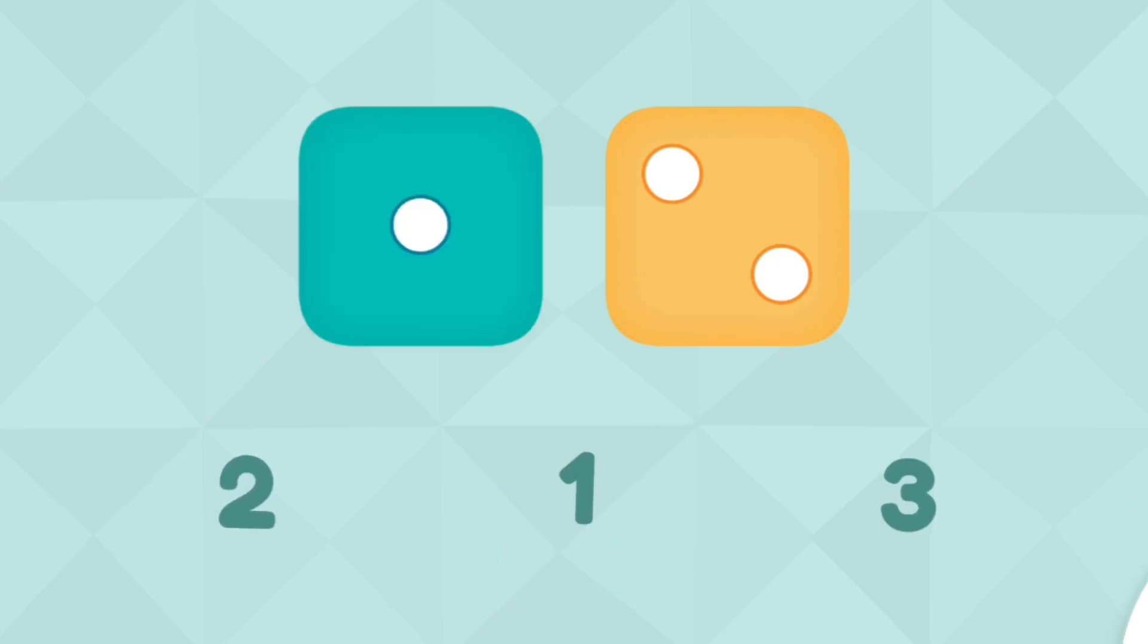How many dots are on both dice altogether? Three. Cool beans! You counted three altogether.